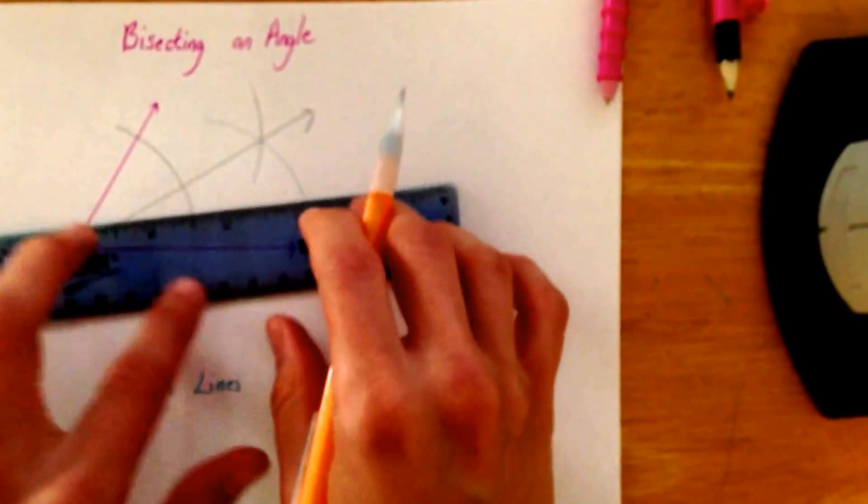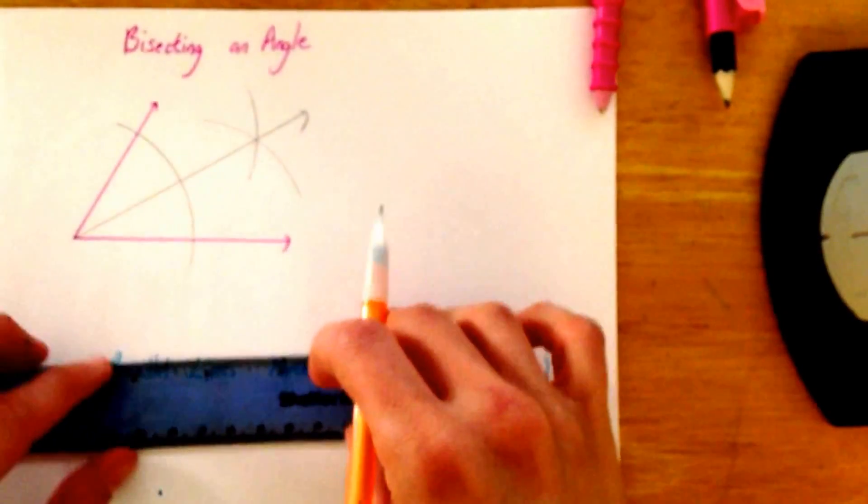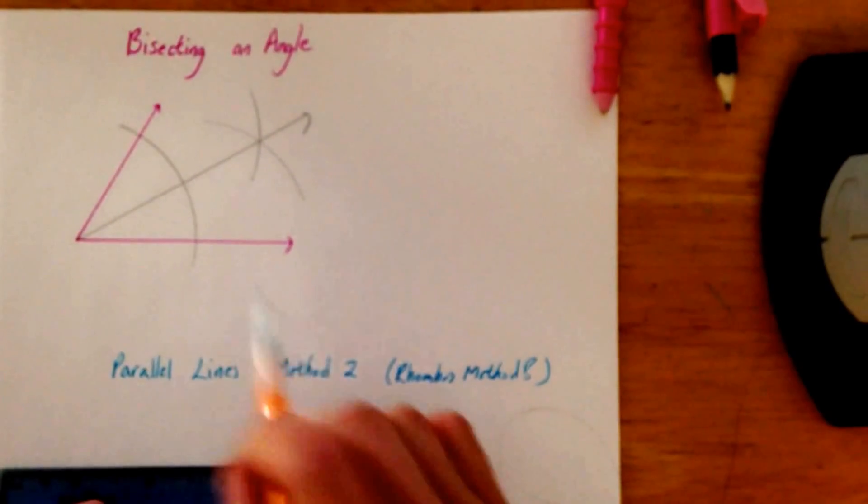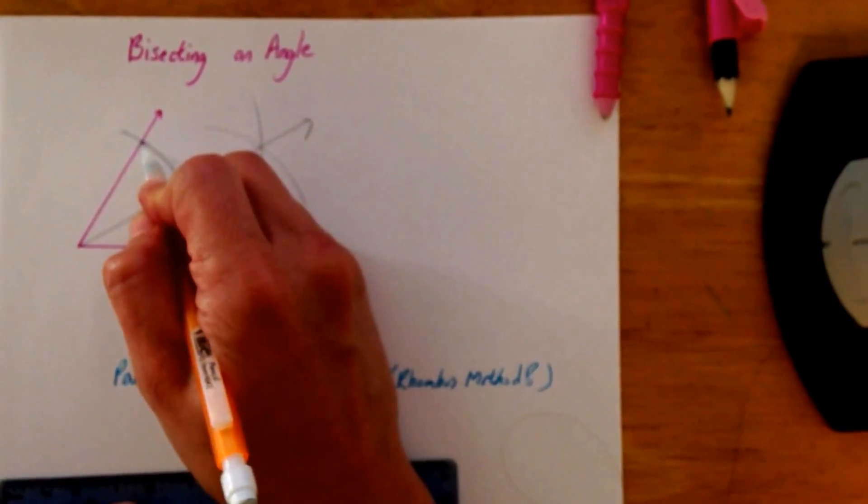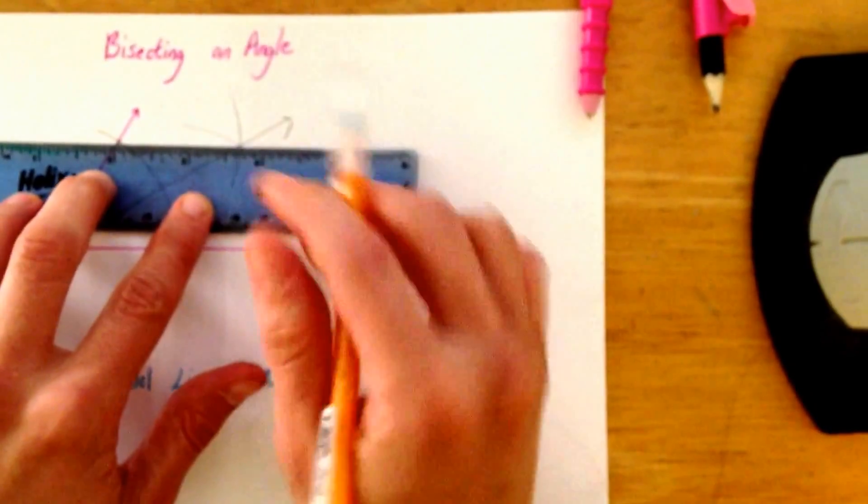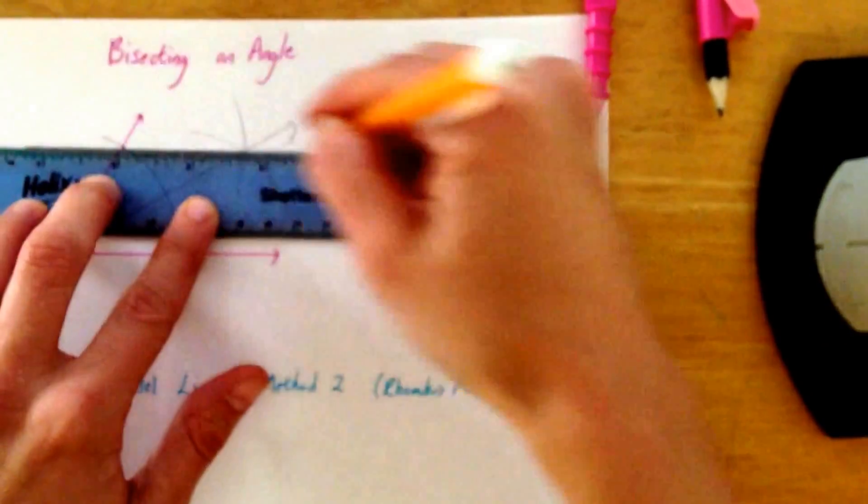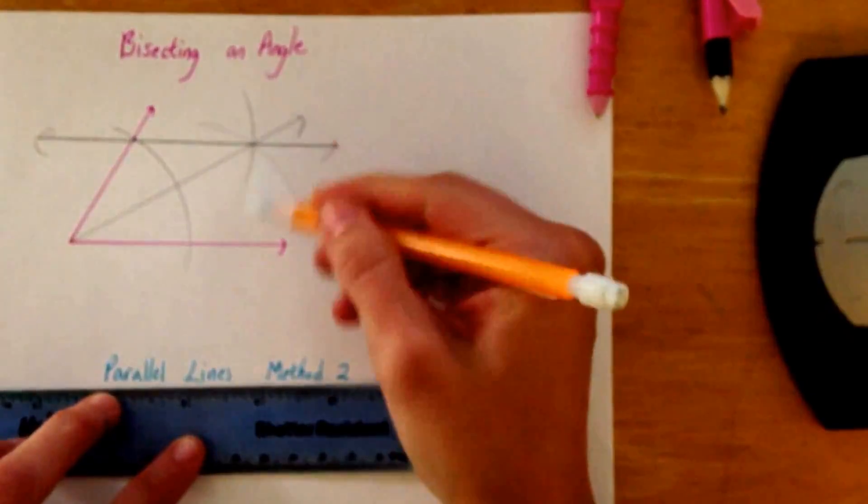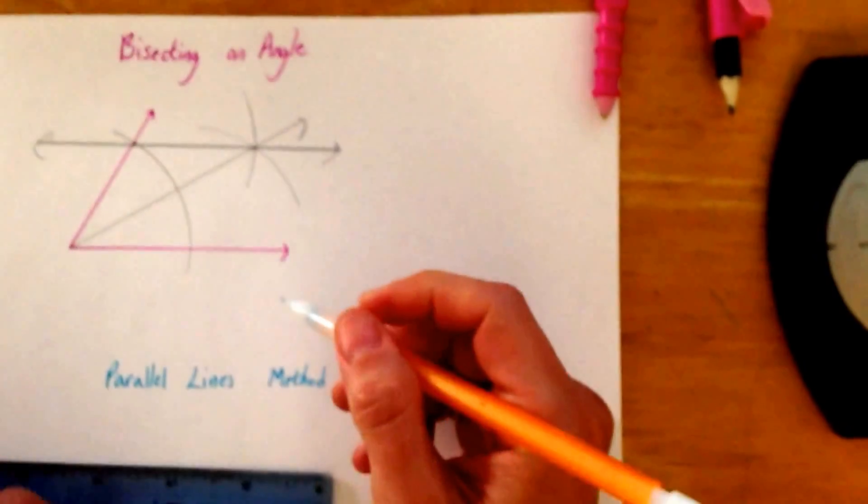Now, check this out. We're done with bisecting an angle, but what if we connected these points, that point and the point you just got? What's nifty about this line here? Does it look parallel? It is!